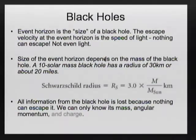The size of this event horizon is extremely small and depends linearly on the mass of the black hole. A ten solar mass black hole has a radius of 30 kilometers. A one solar mass black hole has a radius of 3 kilometers — so it's 3 kilometers for each solar mass. If you were able to compress the sun into a region with a radius of less than 3 kilometers, the whole thing would collapse and that would be the event horizon.